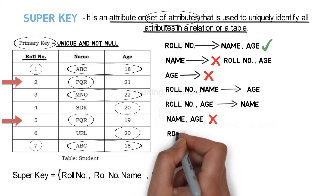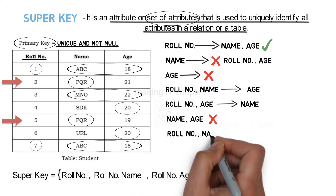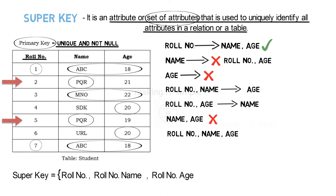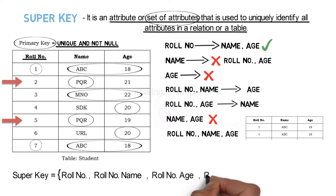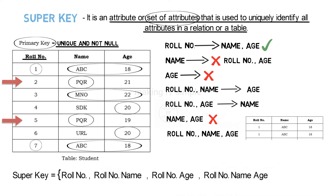Finally, if we consider all attributes — role number, name, and age — using these can we identify rows uniquely? In this example role number is the primary key, so there will not be a condition where there are two identical tuples. Therefore, the set {role number, name, age} is also a super key. These are all the possible super keys in this relation.